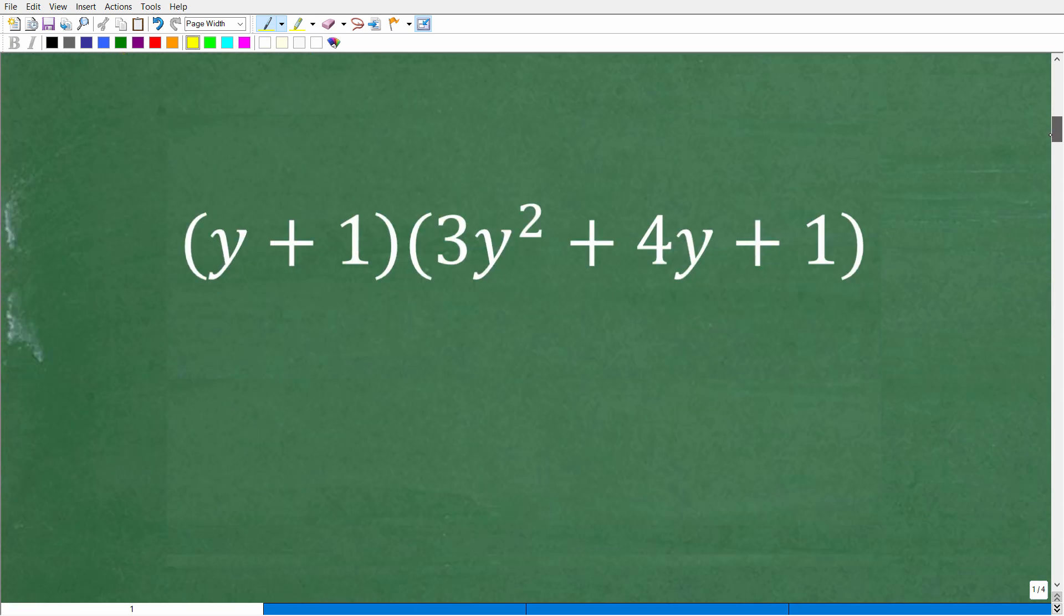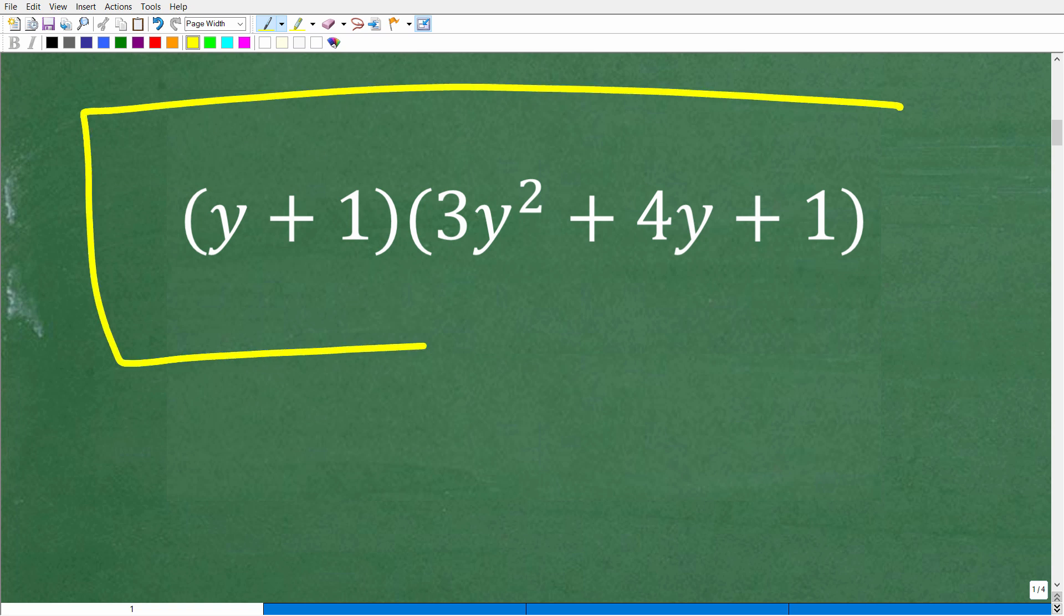Okay, so there's actually different ways you can do this problem. But I'm going to show you a particular technique, which I think is the easiest way to do polynomial multiplication. All right, so here is how it works. So you're going to focus on the polynomial to the left. So in this case, we have y plus 1, and we want to focus in right here.